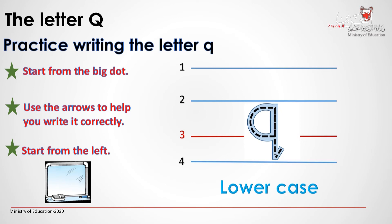For writing a lowercase Q, we start again from the red dot, following the arrows. Going up again and then down in a straight line, and up again in a very short line. We start from the red dot making half a circle, going up again, then downwards in a straight line, and then up again in a short straight line. Remember, lowercase Q is between line number two and line number four.